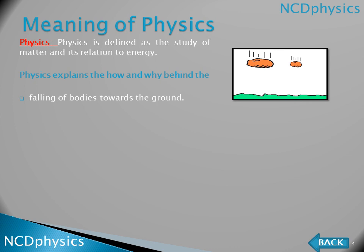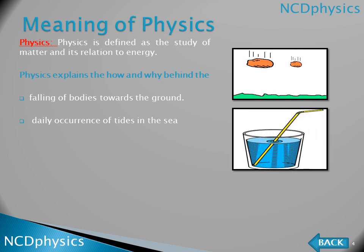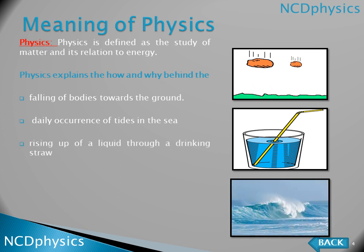For example, the falling of bodies towards the ground — if you drop a pen from a certain height, you see it falling down towards the ground. Why does that happen? Another example is the daily occurrence of tides in the sea — waves and tides occur in the sea. Also, the rising of a liquid through a drinking straw, where the water level inside the straw differs from that in the beaker.